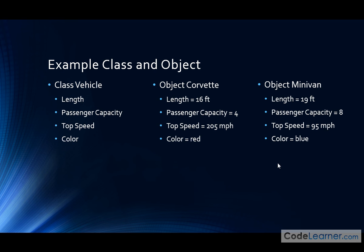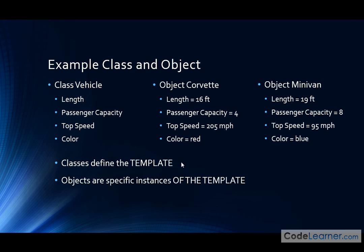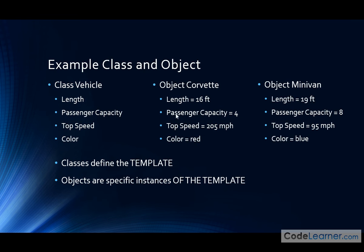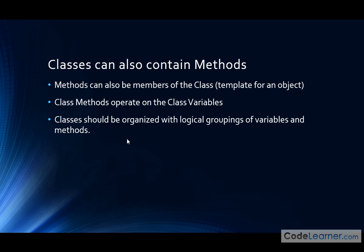That's the major relationship between the two. Classes define the template; objects are specific instances of the template. Now, classes can also contain methods. You know now why I introduced methods before — a method is something we use to calculate something in Java or perform a function. Methods in previous discussions were isolated things, but here we can add methods and they can also be members of the class.